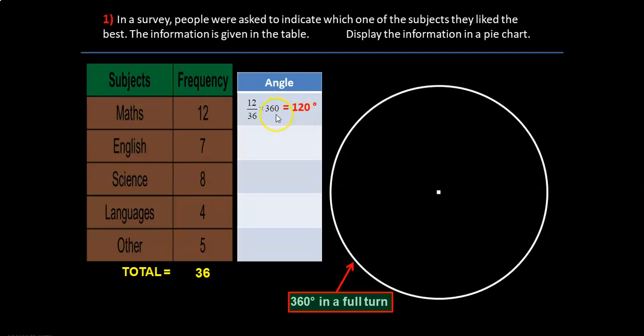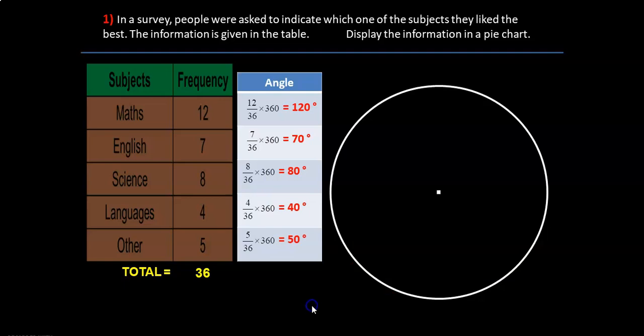Now since you know you have to multiply by 10 each time you can write the problem again for English, 7 out of 36 times 360. 360 divided by 36 is 10. So 7 times by 10 is 70 and so on. Same numbers here, only thing the numerator is different. So 360 divided by 36 is 10. So multiply every number by 10. So 8 times by 10 is 80 and then 4 times by 10 is 40 and then 50.